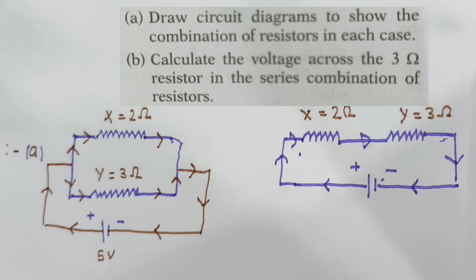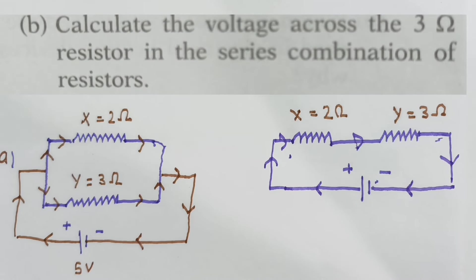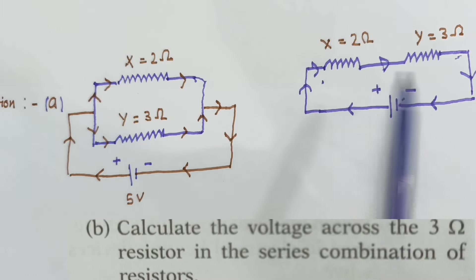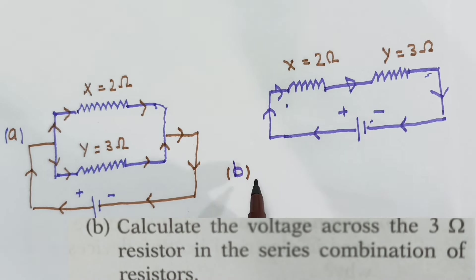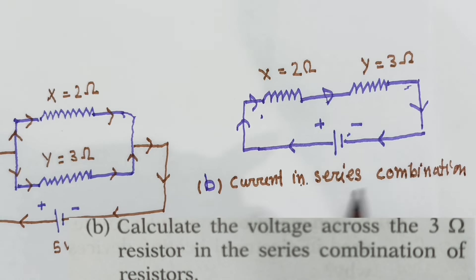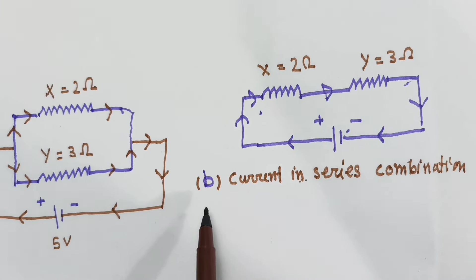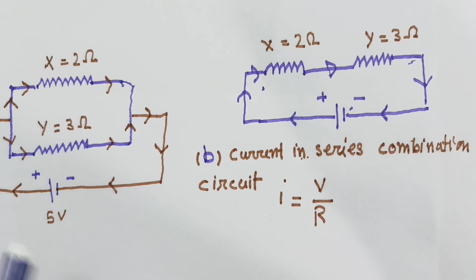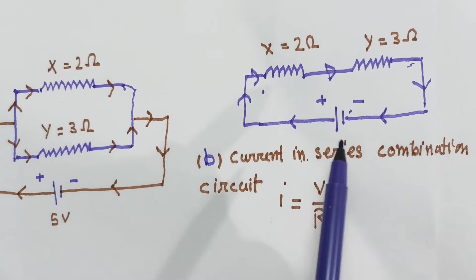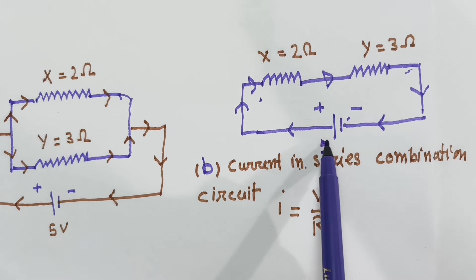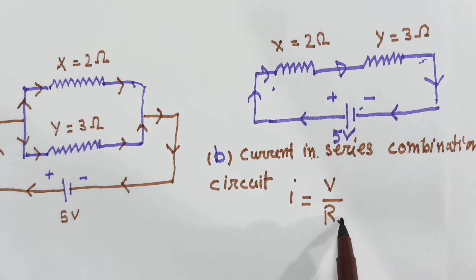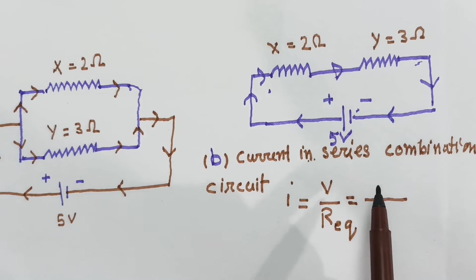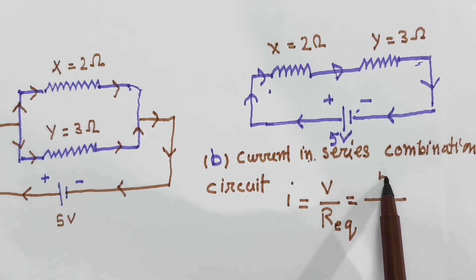Now we have to calculate the voltage across the 3 ohm resistor when putting this in series combination circuit. Current I equals V upon R. Here is V, V is 5 volt battery, 5 volts.